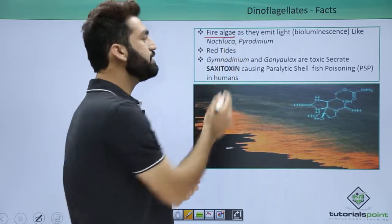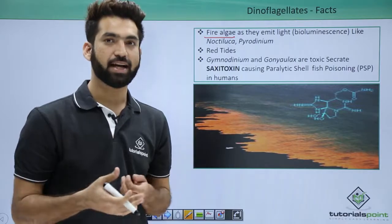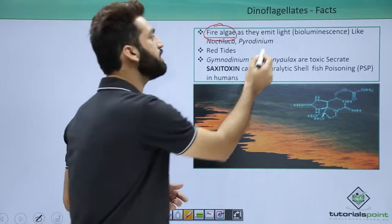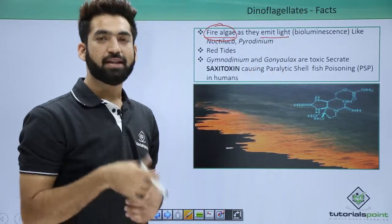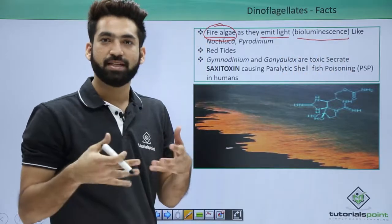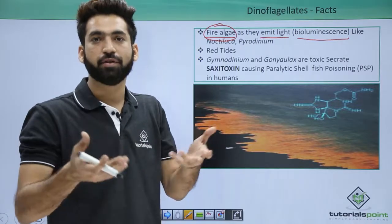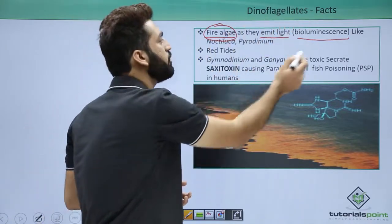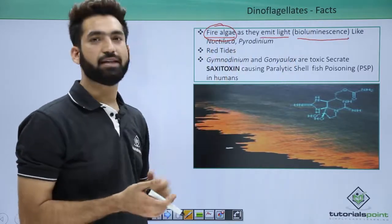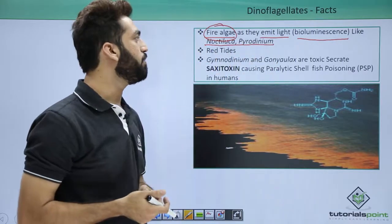One very important fact is dinoflagellates are members of Pyrrophyta. Phyta means algae, pyro means fire. They are called fire algae because they emit light and have the ability to show bioluminescence. Bioluminescence means some biological agents that emit light, they fluoresce, they give you color. In the sea they can fluoresce and give you color, so they emit light. Because of that they are called fire algae. Important dinoflagellates that emit light are Noctiluca or Pyrodinium.